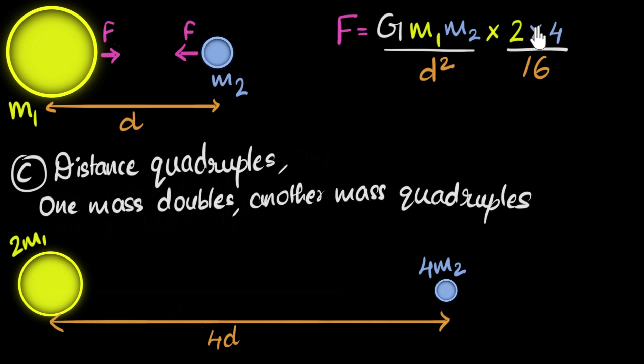Four times two is eight and eight goes one times, eight goes two times. That means there's just a two in the denominator and so the force becomes half. So that's our answer, the force becomes half.